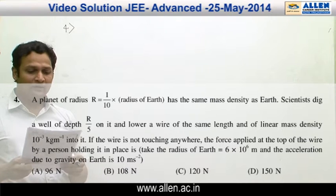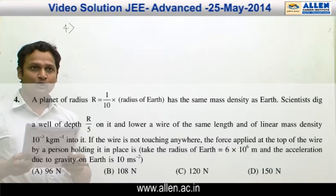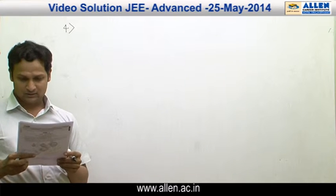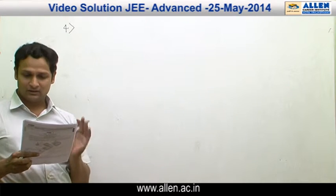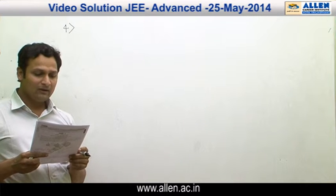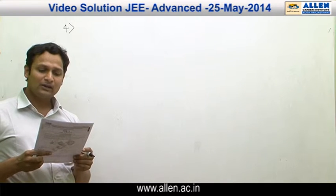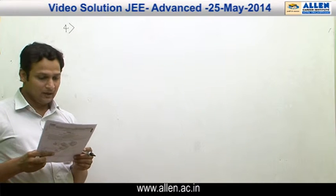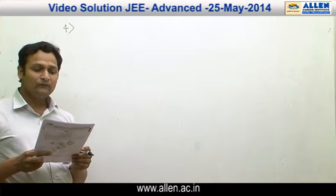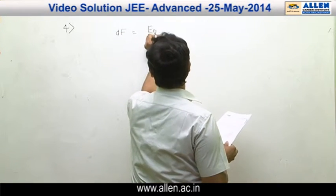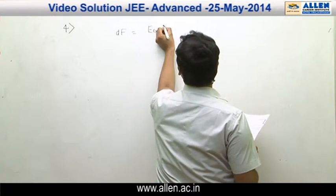Question number 4: a planet of radius R equal to 1/10 of Earth's radius has the same mass density as Earth. Scientists dig a well of depth R/5 on it and lower a wire of the same length with linear mass density 10⁻³. We have to find the force acting on this wire. The elemental force dF equals the gravitational field Eg times dm.